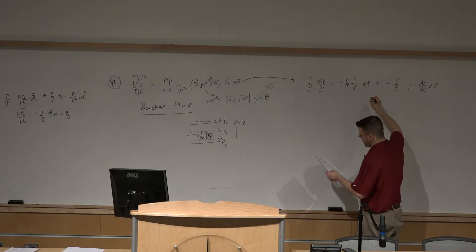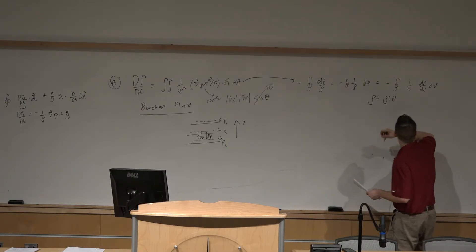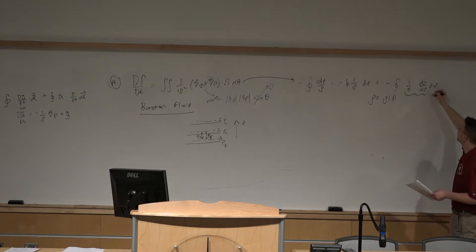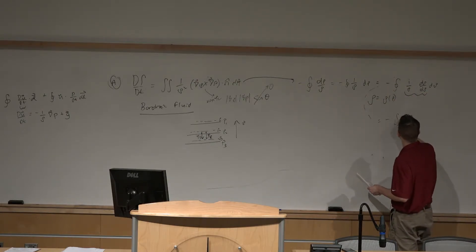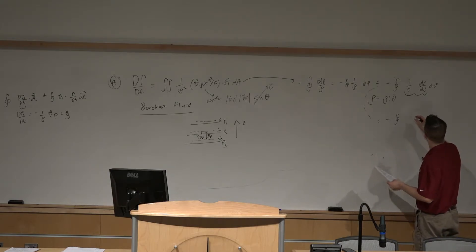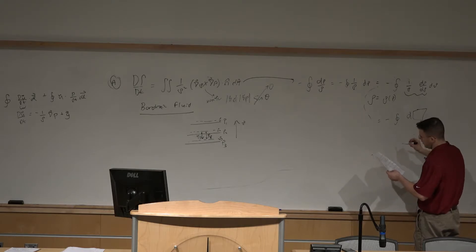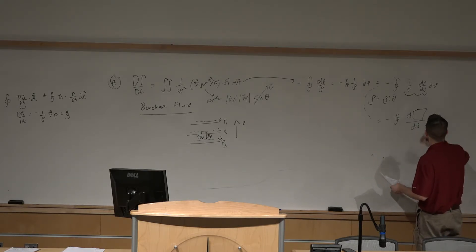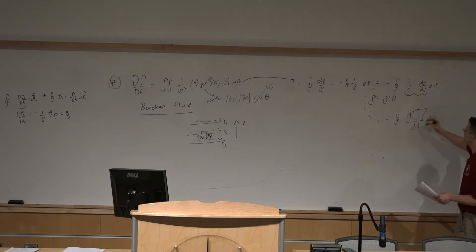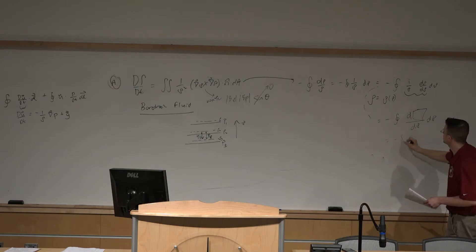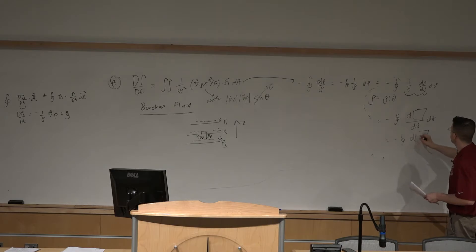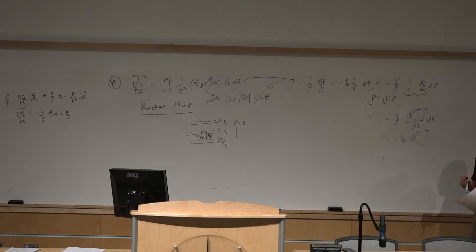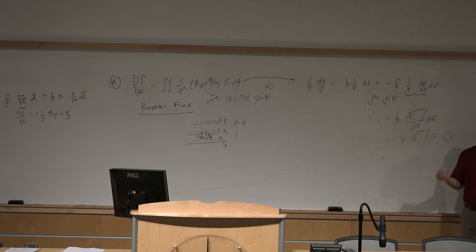For a barotropic fluid, density is only a function of pressure. So we can express the integrand as the differential of some function — d_rho's cancel — giving minus the closed path integral of d of some function. The closed path integral of a perfect differential is zero, so this entire term goes to zero.